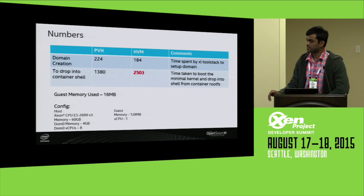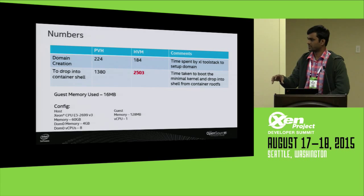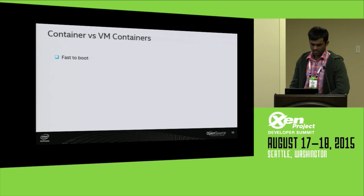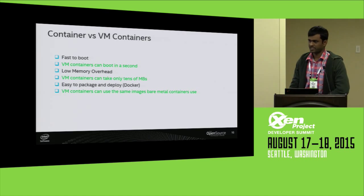This timing is for the Xen toolstack to set up the domain — before it starts, the time it took to create the domain, create XenStore entries, and get the device model ready. That setup took only about 200 milliseconds. The guest used only 16 MB of memory. So VM containers can also take only tens of megabytes, and since we're using the same Docker image to run within the VM, we're taking the advantages of Docker into VM containers as well.